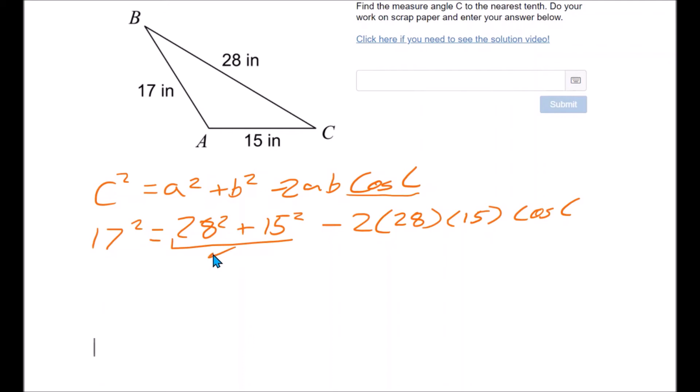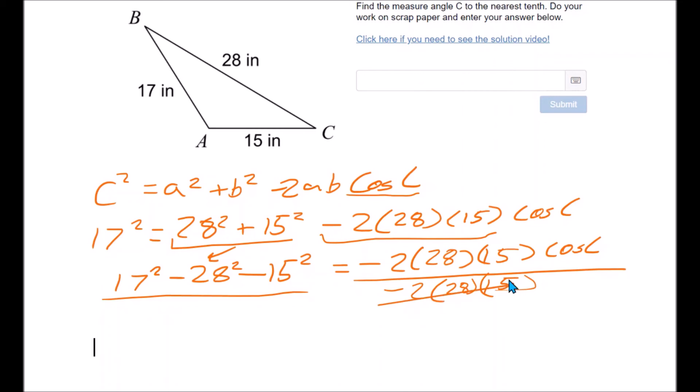I have to subtract these over first, and then I'm going to divide by this, because this is being multiplied. So I have 17 squared minus 28 squared minus 15 squared equals negative 2 times 28 times 15 times cosine c. I know this must be very exciting to watch here. So I'm going to divide both sides by negative 2 times 28 times 15. And of course, it ends up over here.